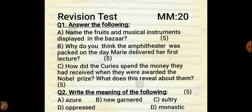The words for which you need to write meanings are: first, azar; second, new garnet; third, sultry; fourth, oppressed; and fifth, monastic. This part is also five marks.